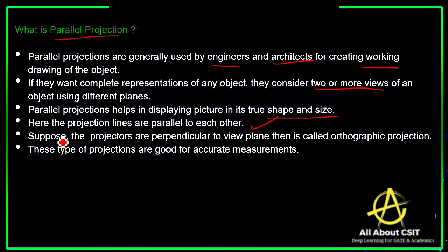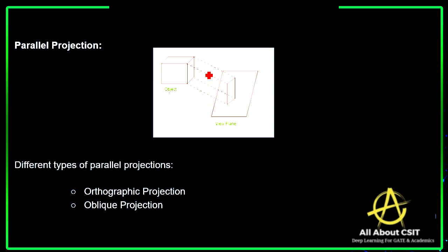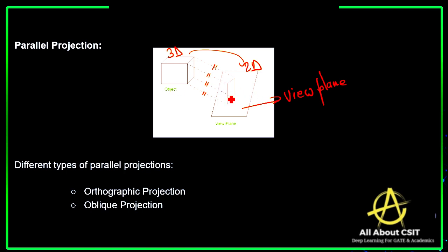In parallel projection, the projection lines are parallel to each other. If the projectors are perpendicular to the view plane, that type of projection is called orthographic projection. Parallel projections are good for accurate measurements. Looking at the diagram, the lines are parallel to each other, and the 3D object is converted into a 2D object and transformed onto the view plane.